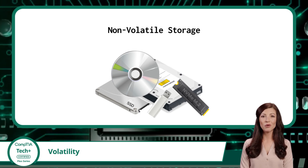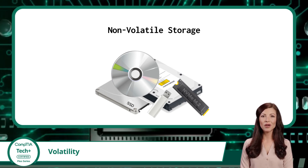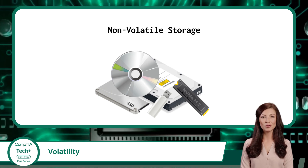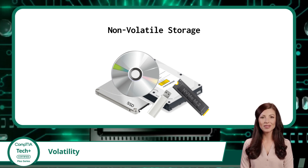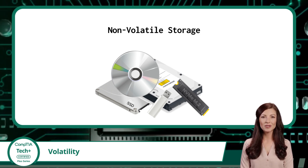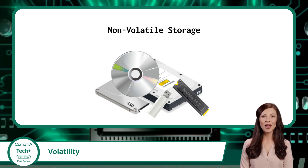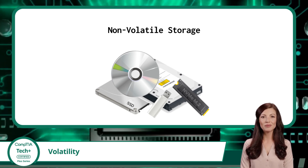Non-volatile storage, on the other hand, refers to a type of storage that retains data even when power is lost or the system is turned off. Examples of non-volatile storage include hard disk drives, solid-state drives, NVMe, optical disks, and flash drives. This is your more permanent storage option, ideal for saving your operating system, applications, and files you want to keep even after the device shuts down.